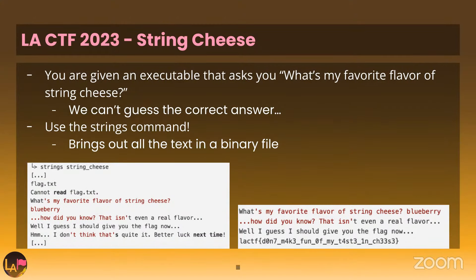A challenge from last year in the rev category is called String Cheese. You're given an executable that asks 'what's my favorite flavor of string cheese?' You put in some text and press enter — if you guess correctly, you get the flag; if not, you don't. Looking at the challenge name implies you should use the 'strings' command, which outputs all the text from a binary file. Running it reveals the answer is 'blueberry', and entering that gives you the flag.